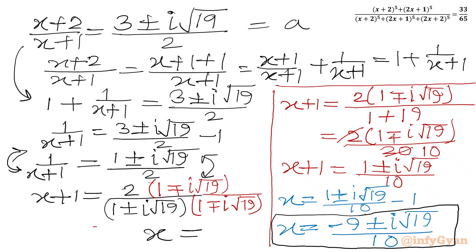So we have two complex solutions x = (-9 ± i√19)/10 and one real solution x = 0, and this brings the end of the video. I hope friends you will like this video. Thank you so very much for watching. Do not forget to like, share and subscribe. Bye-bye till next video. Good luck. Take care.